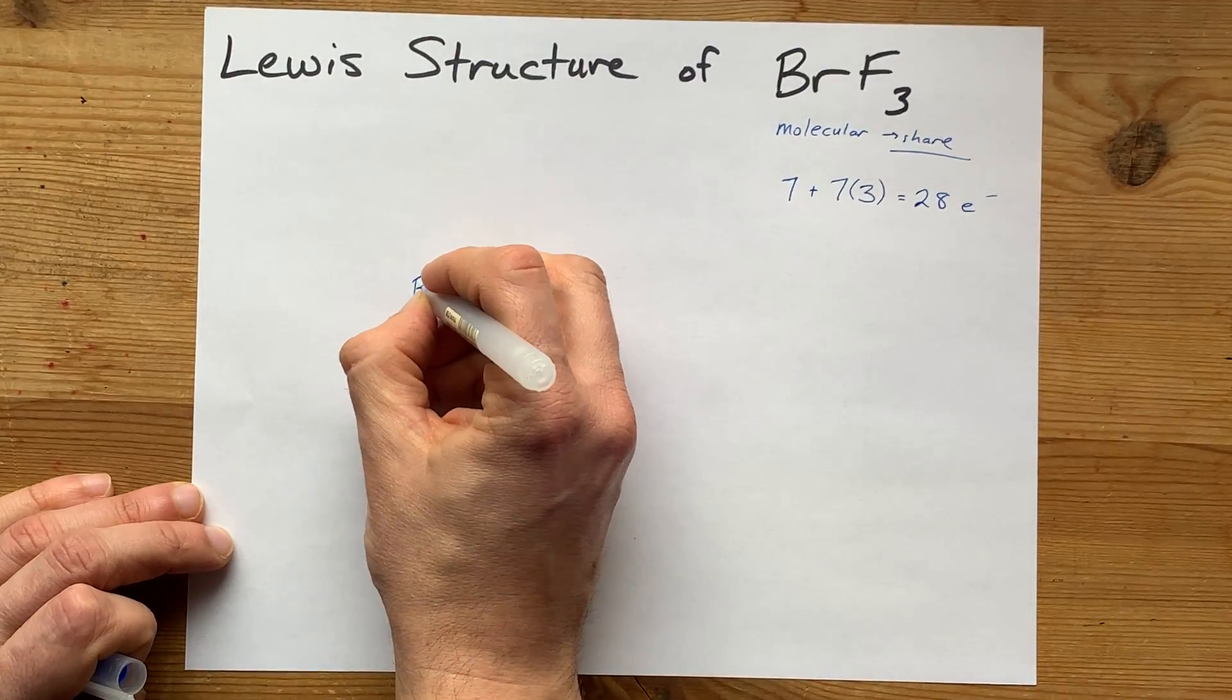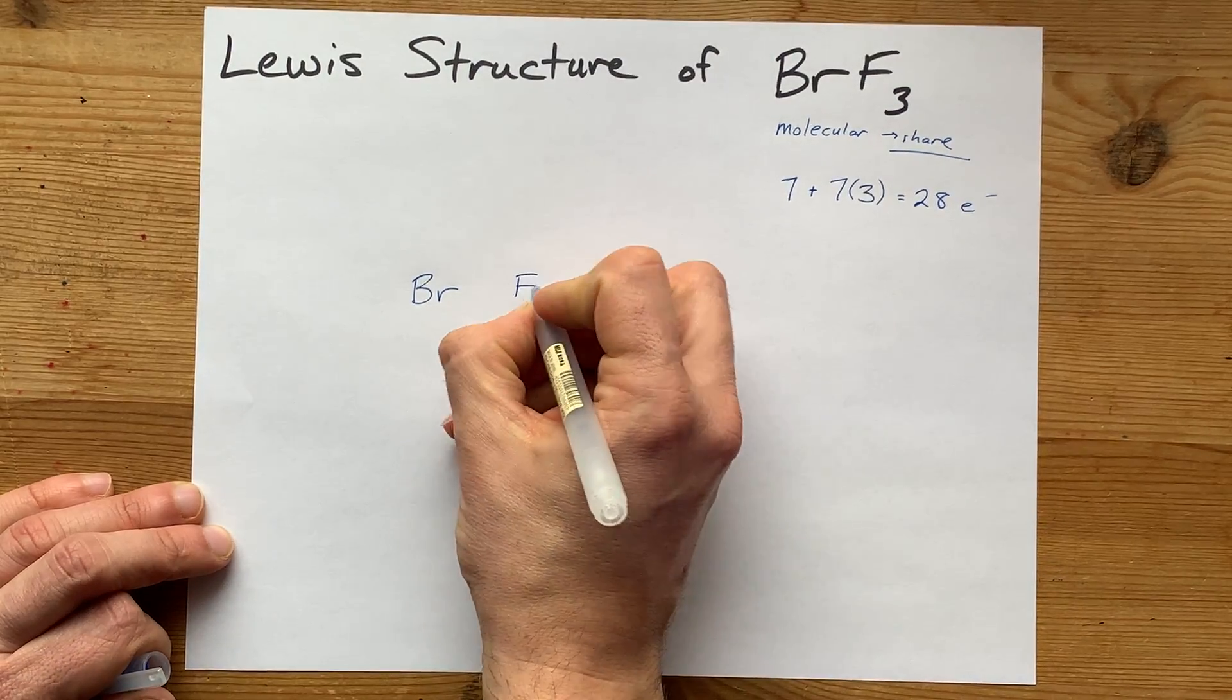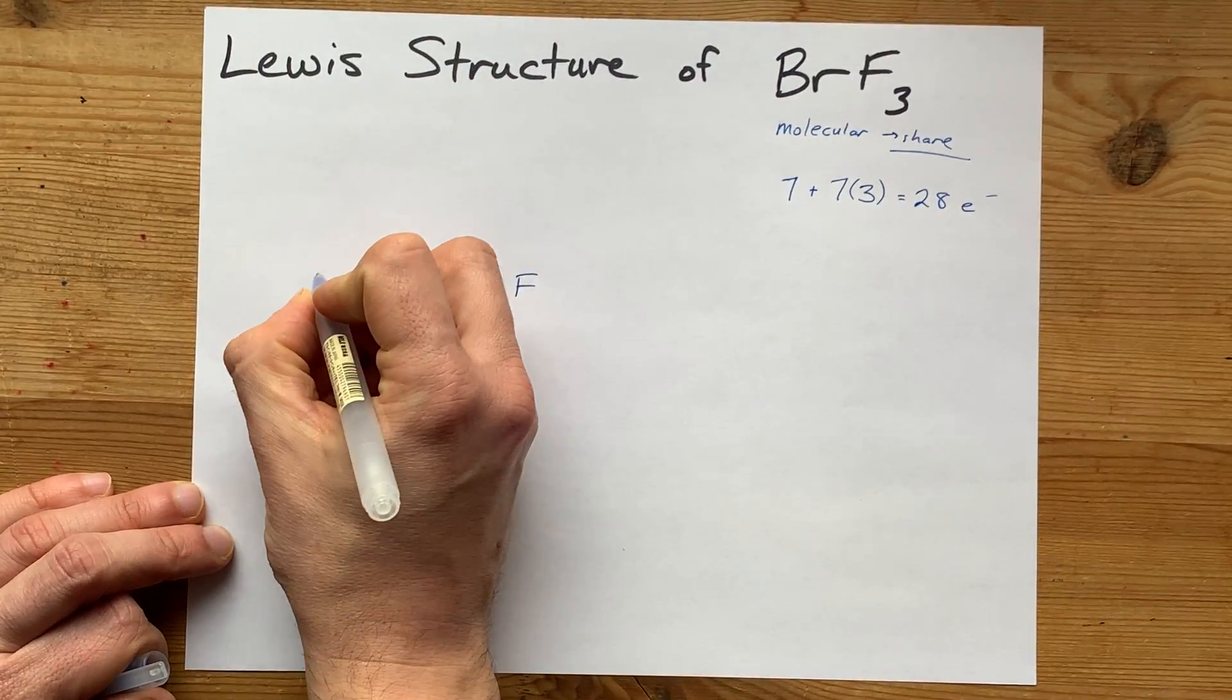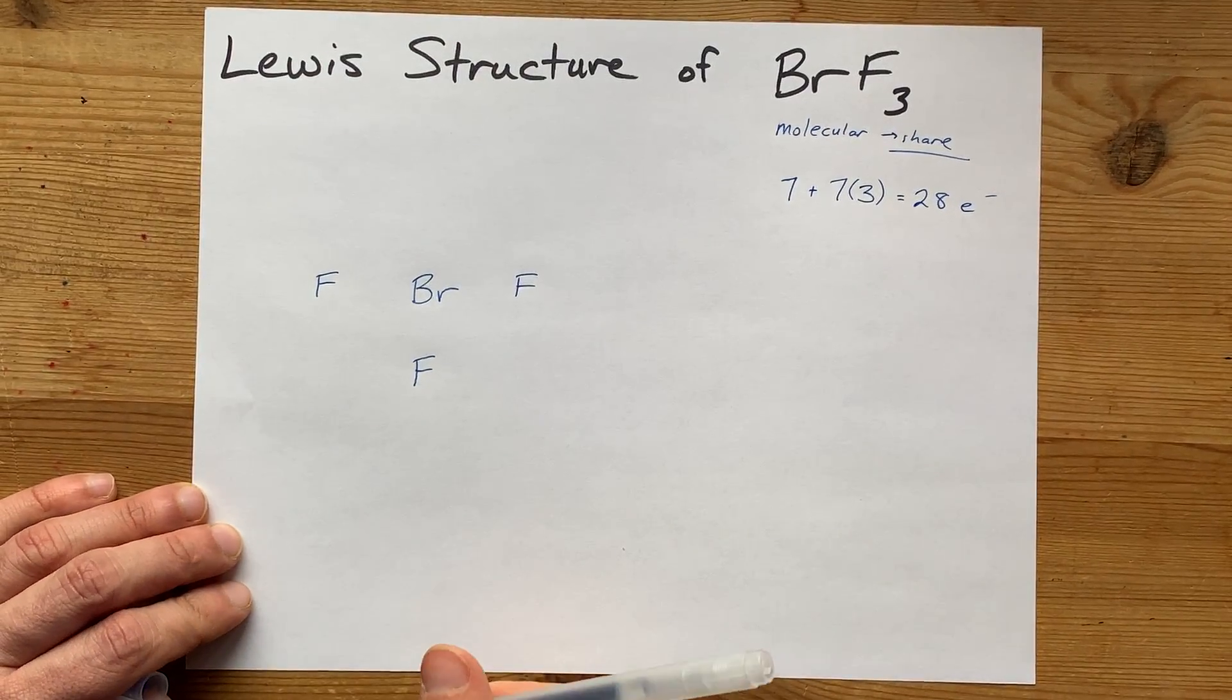Put one atom in the center. In this case, it's the atom we have one of. And then surround it with the other atoms, in this case the fluorines, which can only handle one bond at a time anyways.